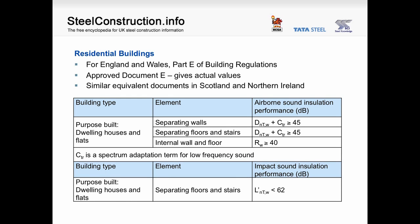For residential buildings in England and Wales, it is Part E of the building regulations that presents the requirements. Approved Document E gives the values required in terms of sound insulation performance, and there are similar standards and requirements in Scotland and Northern Ireland. For separating walls and floors in a purpose-built dwelling, the airborne sound insulation requirement is that DnTW plus CTR is greater than 45 dB. The CTR term is a spectrum adaptation term used to counteract low-frequency sounds, normally in the region of minus 5 dB to minus 12 dB.